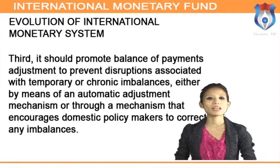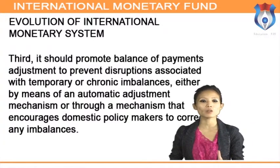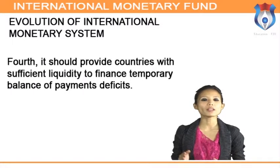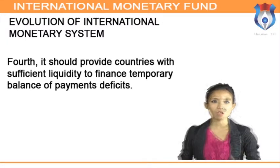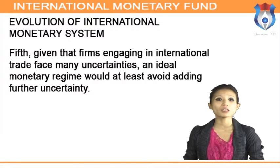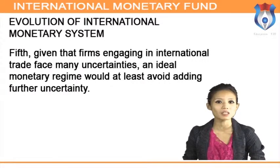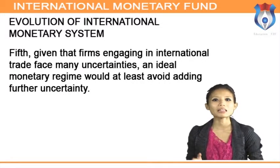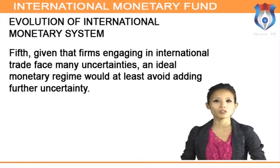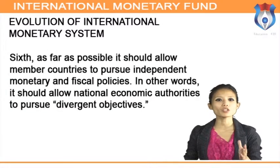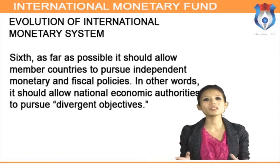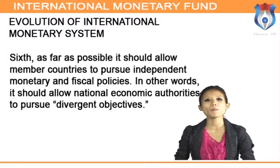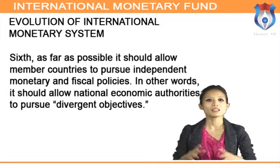Fourth, the international monetary system should provide countries with sufficient liquidity to finance temporary balance of payments deficits. Fifth, given that firms engaging in international trade face many uncertainties, an ideal monetary regime would at least avoid adding further uncertainty. Sixth, as far as possible it should allow member countries to pursue independent monetary and fiscal policies — in other words, it should allow national economic authorities to pursue divergent objectives.